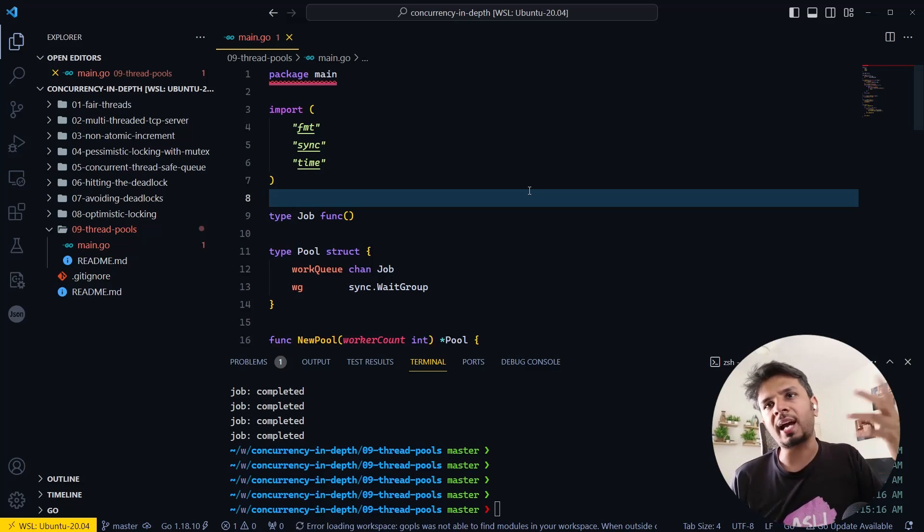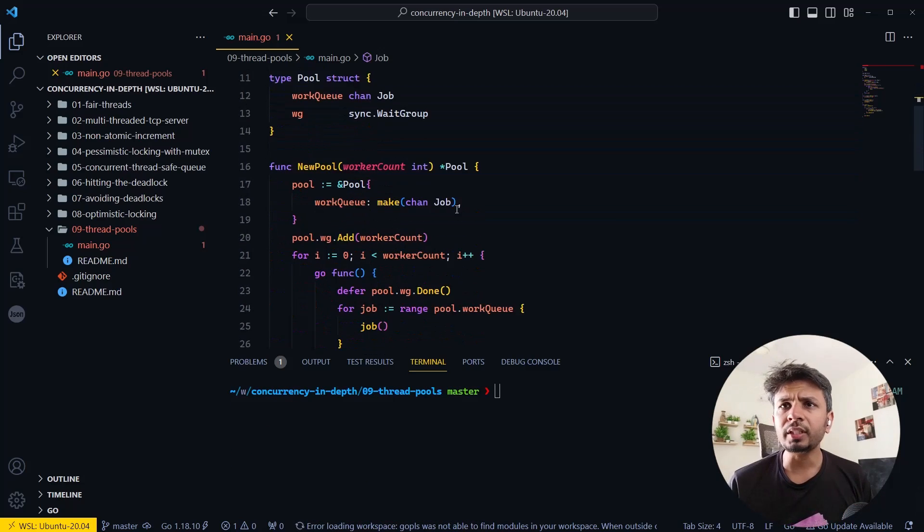I would highly encourage you to implement it right now. You can pick your own favorite language. I picked Go because I prefer it over a lot of languages. If you're using C the implementation would vary slightly. Using Java you can use concurrent blocking queue and whatnot.